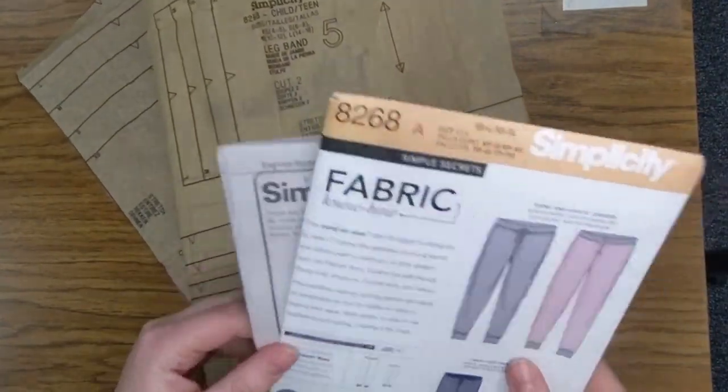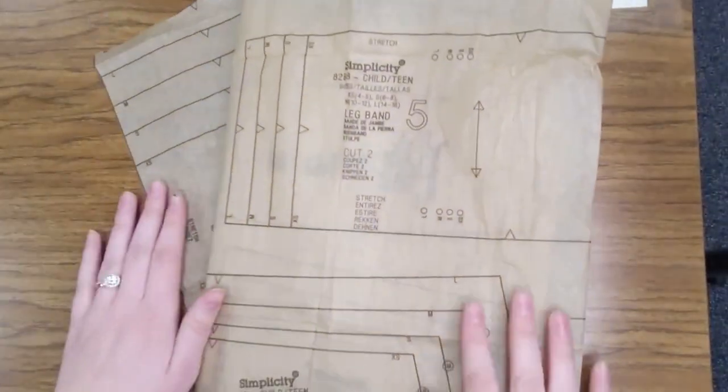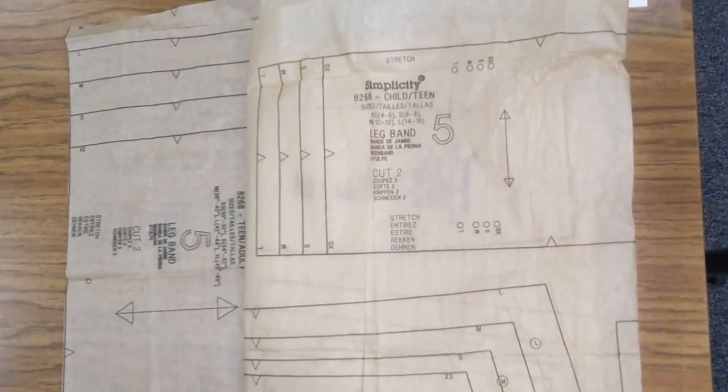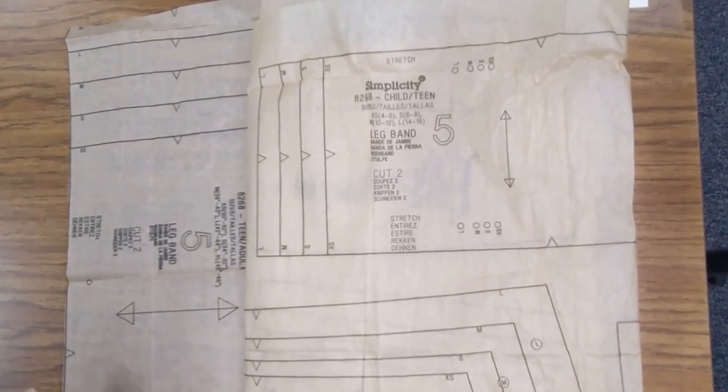In this video, we're going to focus mostly on our pattern tissue here, and this is what it looks like. It's kind of just this brown, really light paper. It's so thin that you can actually use fabric scissors on it, which is kind of nice.